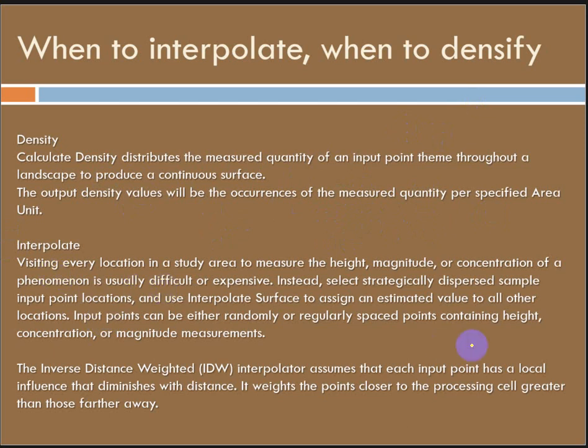Visiting every location in a study area to measure height, magnitude, or concentration of a phenomenon is usually difficult or expensive. But you could use a strategically dispersed sample of input point locations and use interpolation to assign an estimated value to all other locations. This is what we do with rainfall, wind speeds, solar radiation. We're obviously not measuring at every single three meter cell on a landscape. We're estimating or interpolating in between them.